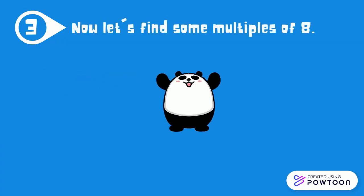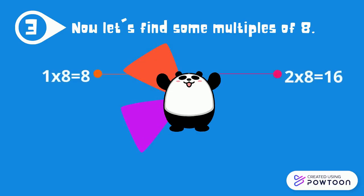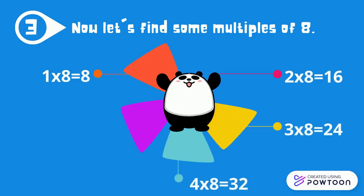Now, let's find some multiples of 8. 1 times 8 is 8. 2 times 8 is 16. 3 times 8 is 24. 4 times 8 is 32. 5 times 8 is 40.